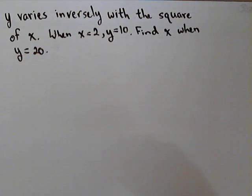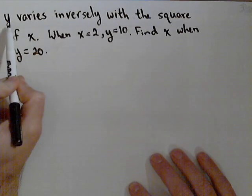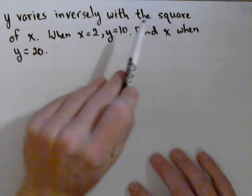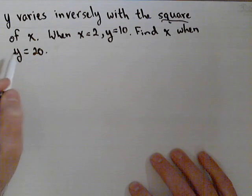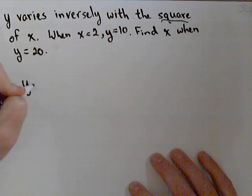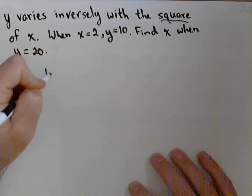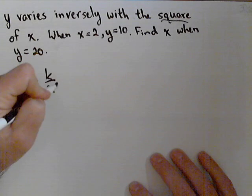In this video, we're going to deal with inverse variation. So when we're told y varies inversely with the square of x, we want to pay attention to that. We can set up a relationship: y equals k over x squared.